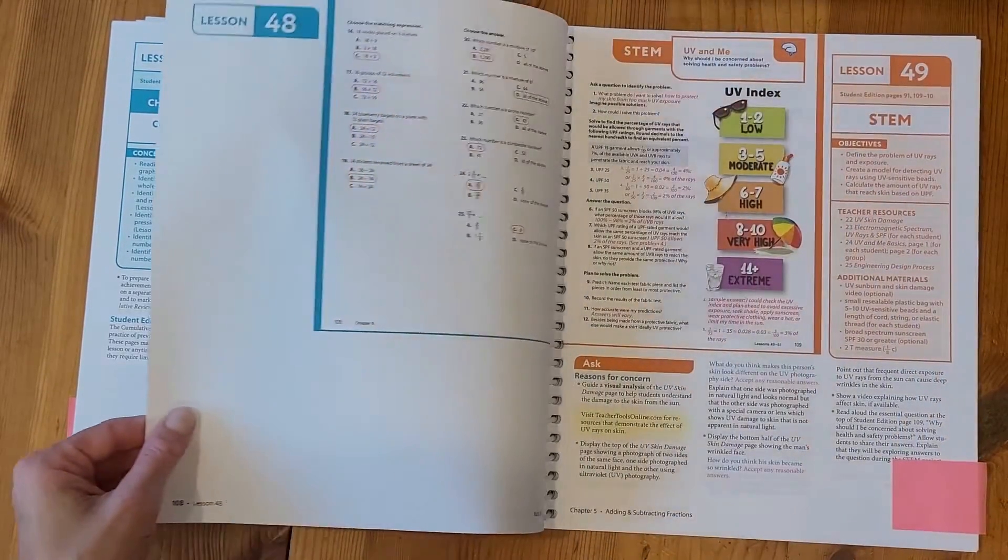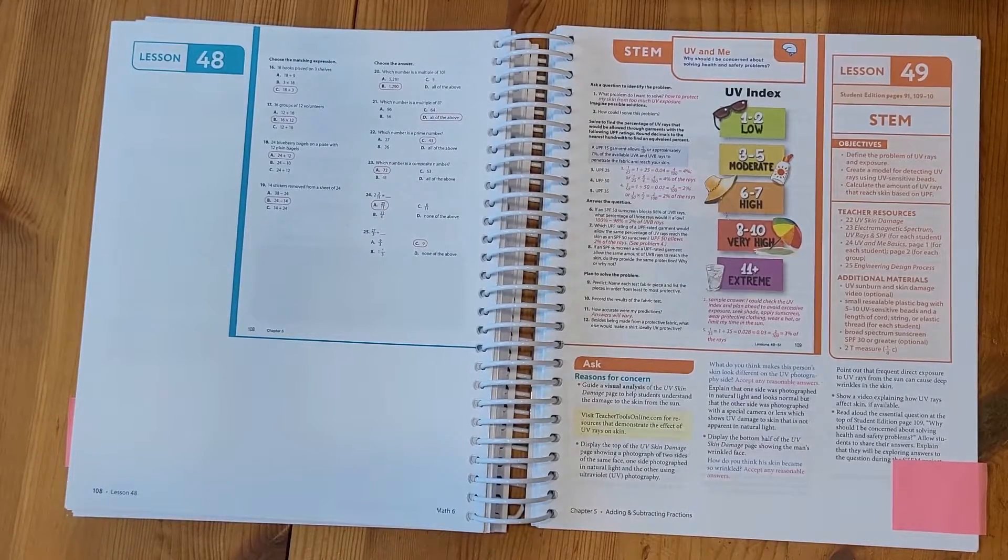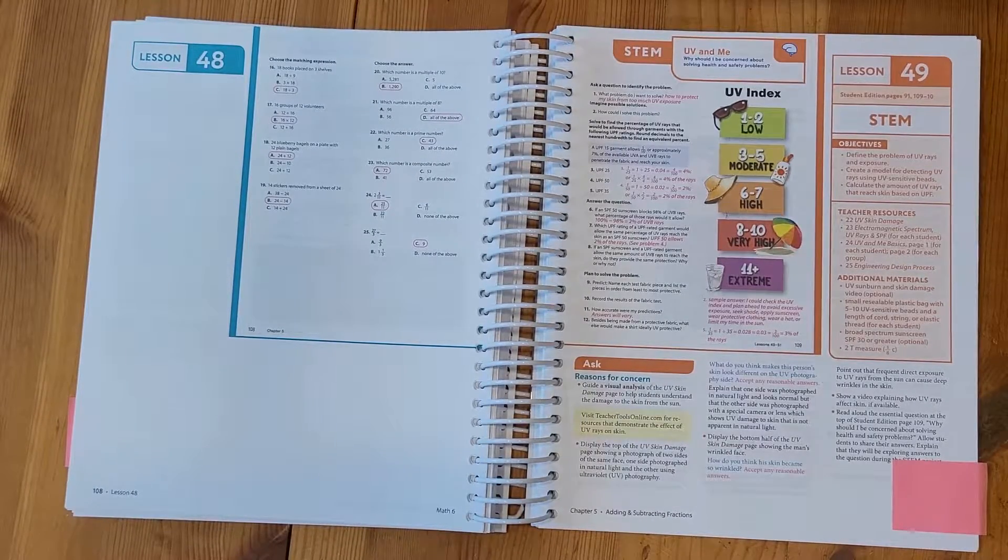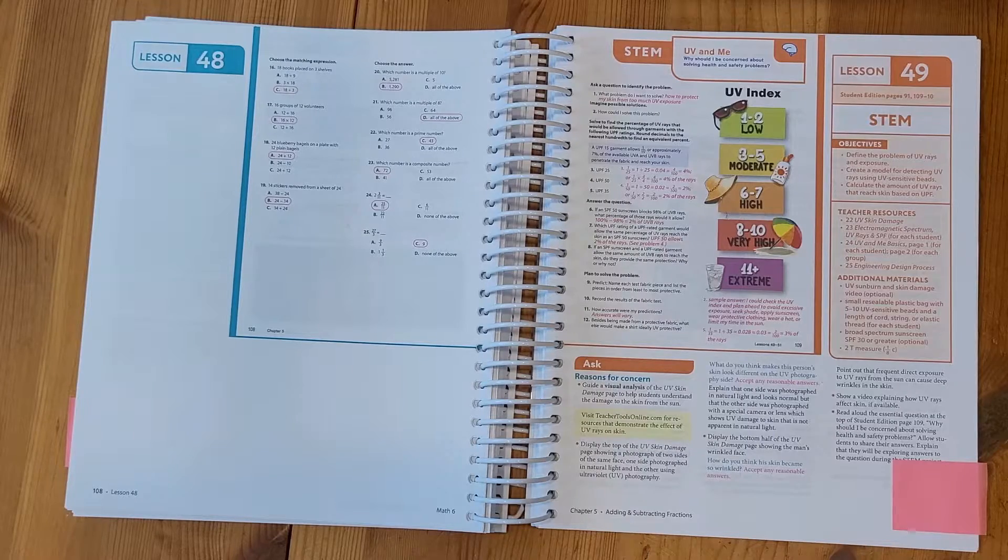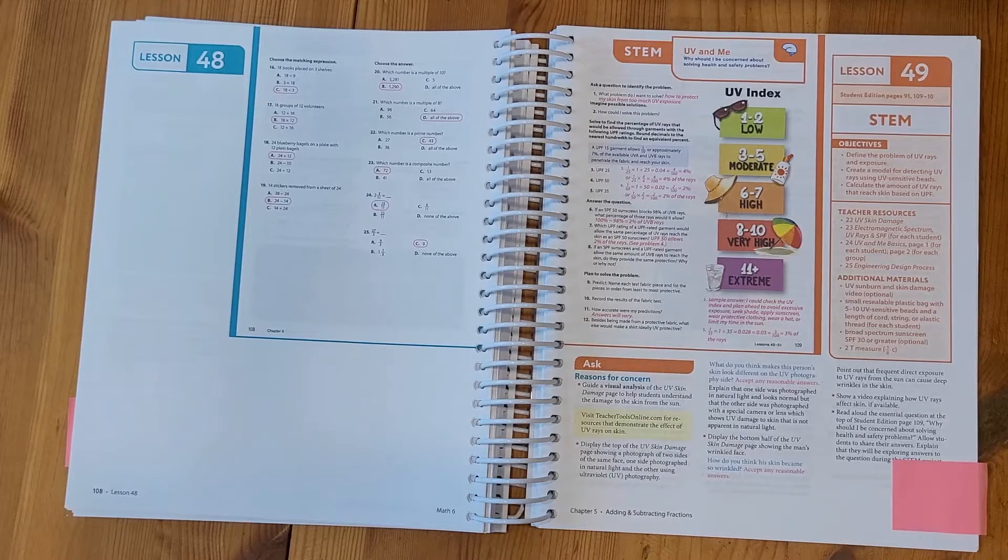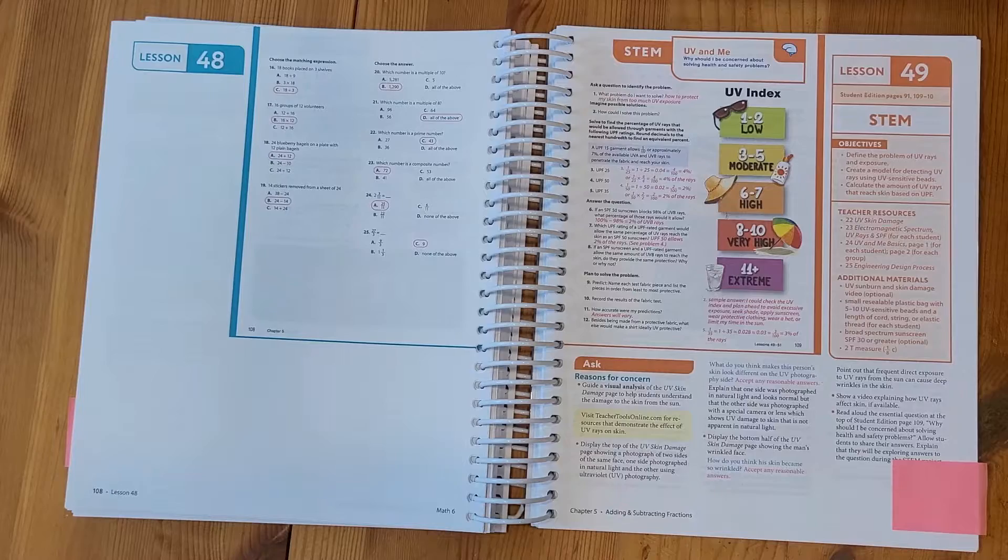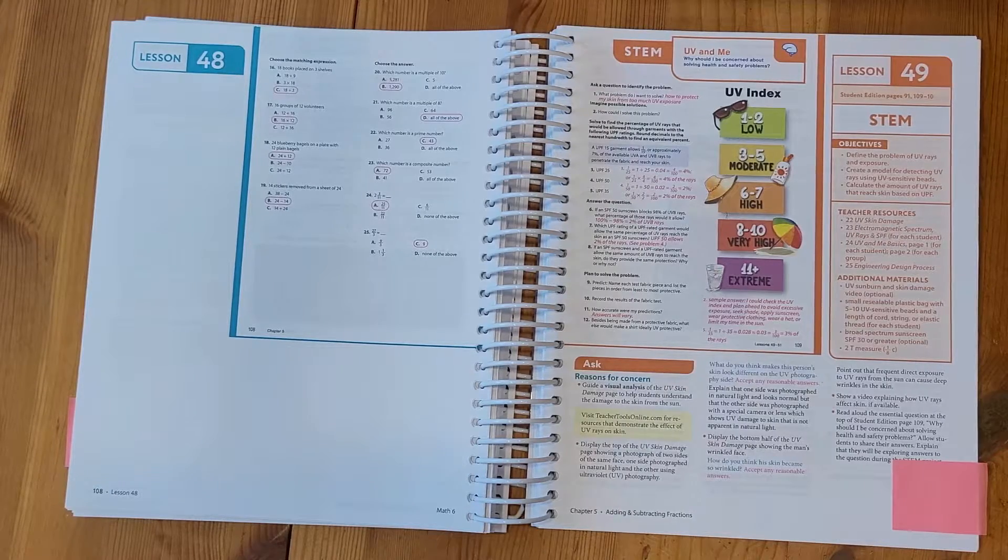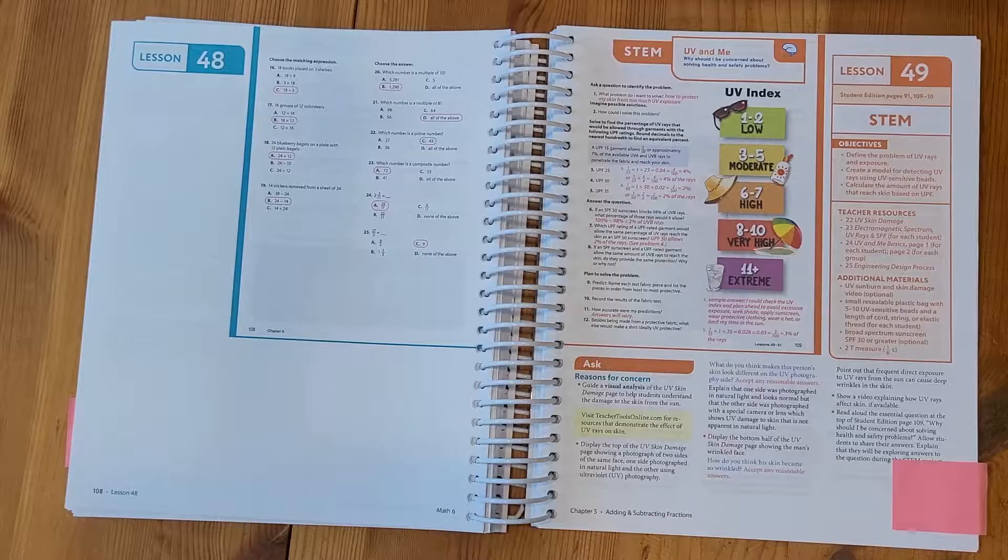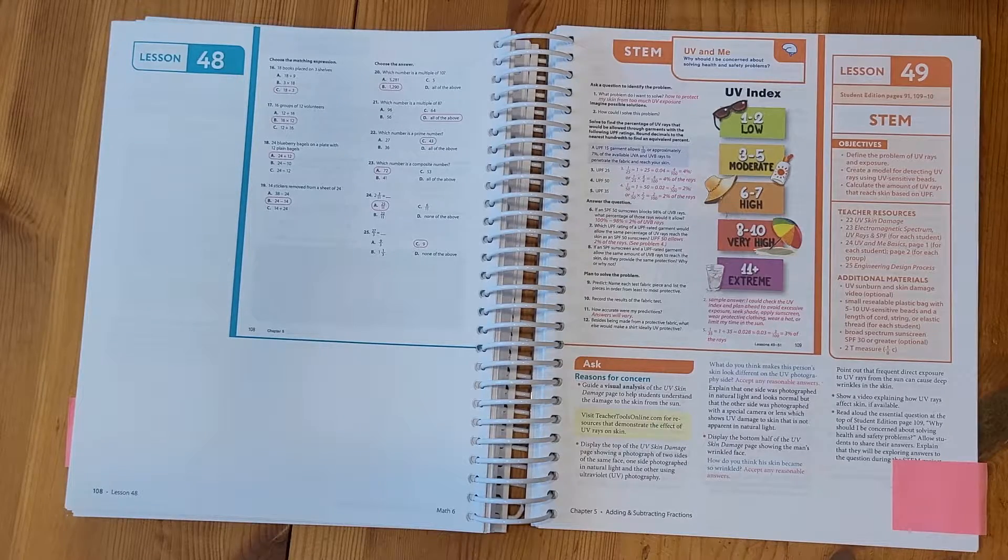And now this chapter, remember, ended with a STEM project. So the STEM project this time is called You, V, and Me. And it says, why should I be concerned about solving health and safety problems? And your student will go through a series of questions and work out some math, come up with a prototype, try to solve the problem.